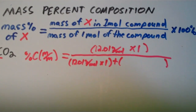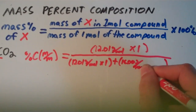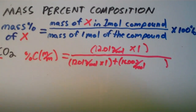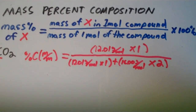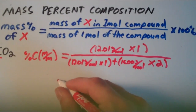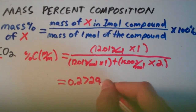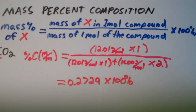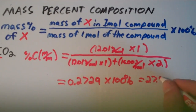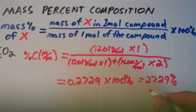The molar mass of oxygen from the periodic table is 16.00 grams per mole, and since there are two oxygen atoms, we multiply this by two. Carrying out this calculation gives us 0.2729, and then we tack on times 100% to express it as a percentage.